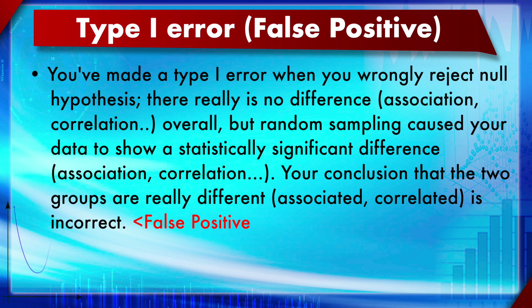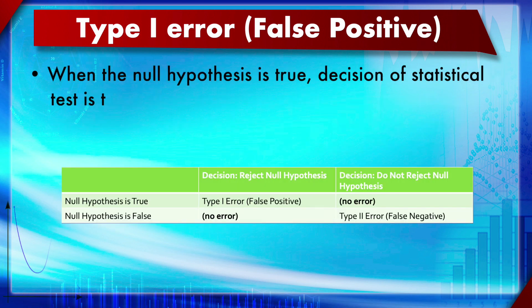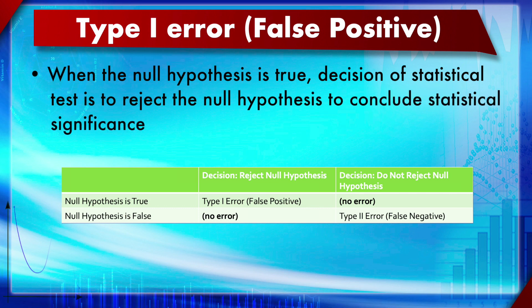This is what we call the Type 1 error, also known as false positive. When the null hypothesis is true but the decision of the statistical test is to reject it and conclude statistical significance, that is a false positive. False positive is very common — Type 1 error is extremely common because everybody wants to say there is significance, but in reality there is no significance at all.